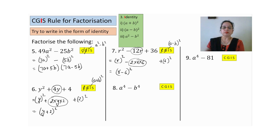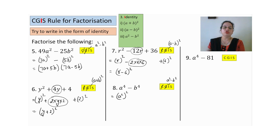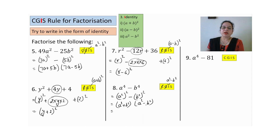Eighth sum — common not possible, grouping not possible. Two terms, middle sign is minus, so we use a²-b². Write a⁴ as (a²)² and b⁴ as (b²)² using laws of exponents. Once we add and once we subtract inside the bracket. Now notice that a²-b² is itself also an identity, so we apply it again: once we add and once we subtract. So these are the factors, using the identity twice.